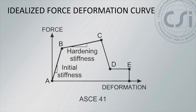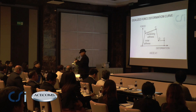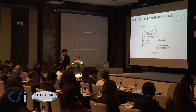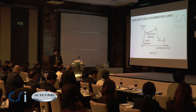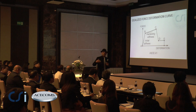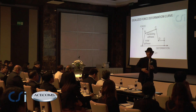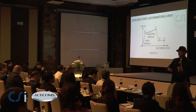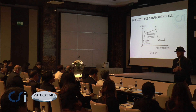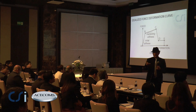Those force-deformation relationships that we talked about in the beginning, where I had a force-deformation relationship of just a bar — we had drawn the stress-strain curve of a bar, then I had a force-deformation relationship of a beam. What the ASCE code has done is that for a wide variety of different components, whether they were beams, columns, reinforced concrete beams, reinforced concrete columns, shear walls, connections — a wide variety of different systems — the code has defined force-deformation relationships.